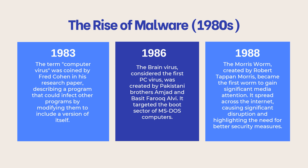In 1988, the Morris Worm, created by Robert Tappan Morris, became the first worm to gain significant media attention. It spread across the Internet, causing significant disruption and highlighting the need for better security measures.